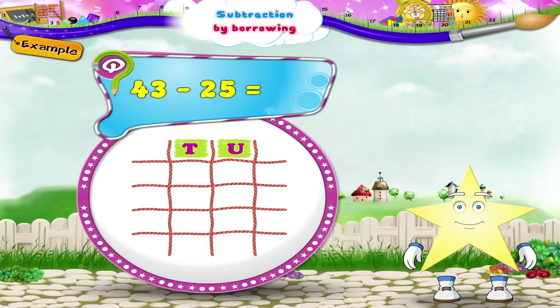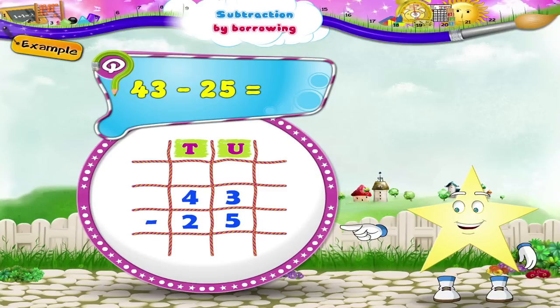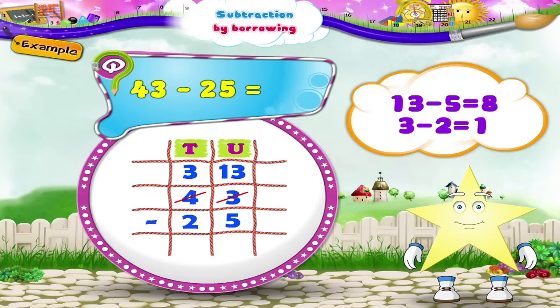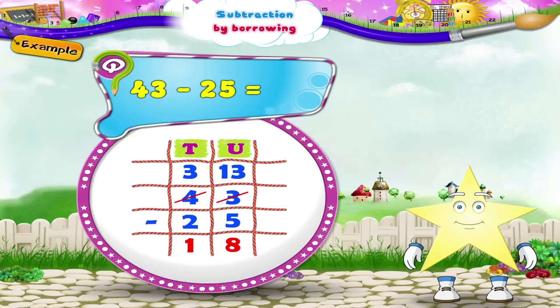In the next example, subtract twenty-five from forty-three. First, let us arrange the numbers vertically. Here we have to subtract a two-digit number from a two-digit number, but the method is the same. Borrow one ten from four tens. We get three tens, thirteen units minus two tens, five units. Thirteen units minus five units is equal to eight units. Three tens minus two tens is equal to one ten. Therefore, forty-three minus twenty-five equals eighteen.